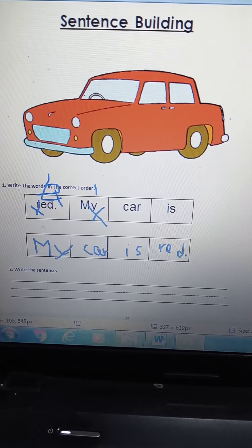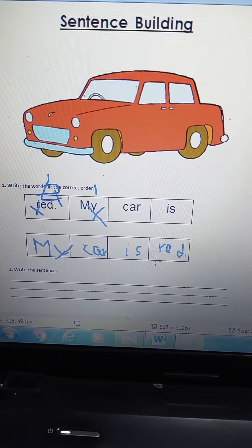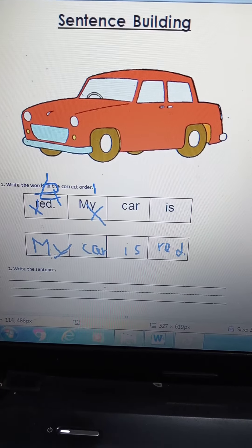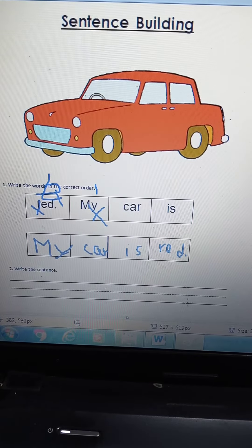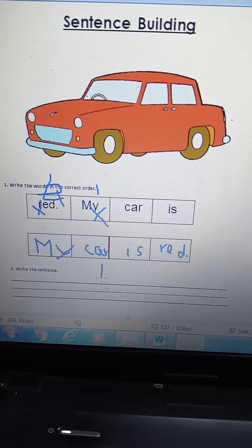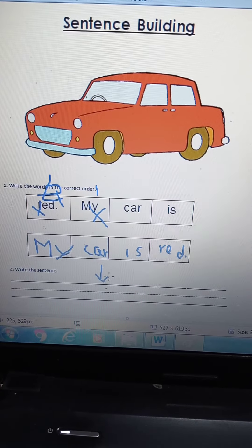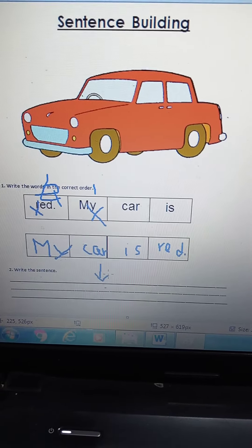And write the sentence here. You write the whole sentence here. Don't forget to put your finger and leave space between each word. Write it big enough, and don't forget the full stop at the end.